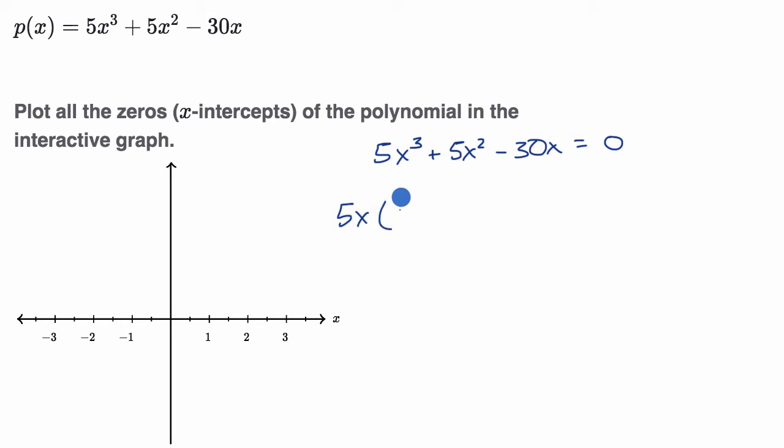So this is going to be 5x times, if we take a 5x out of 5x³, we're left with an x². If we take out a 5x out of 5x², we're left with an x, so plus x. And if we take out a 5x of -30x, we're left with a -6 is equal to zero. And now we have 5x times this second degree, the second degree expression.